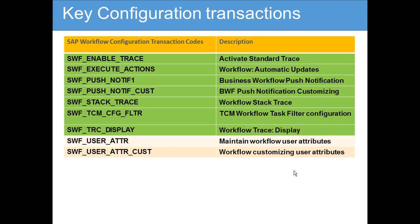We are going to cover the workflow configuration transaction codes. The first one is Enable Trace — you can enable the trace through this. Then there is Execute Action, which handles workflow automatic attributes. Push notification is something very useful in this modern world with smartphones — it is absolutely necessary to be able to send push notifications. The next transaction is Push Notification Customization, where you can customize the type of message being sent.